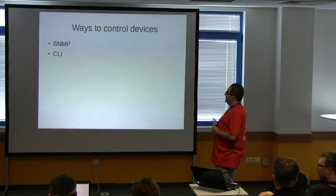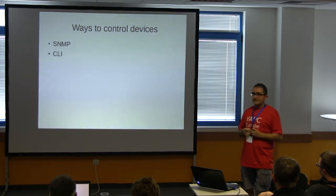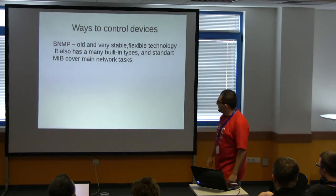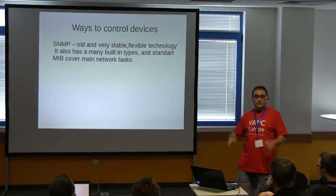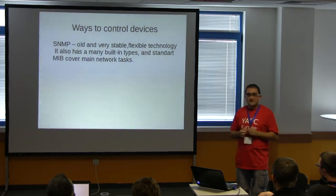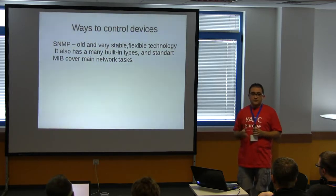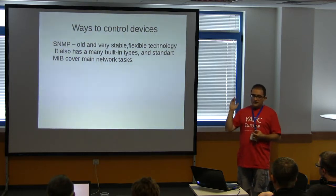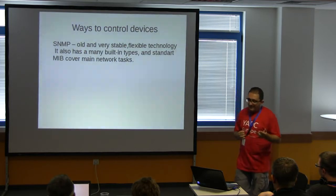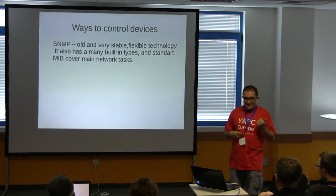Unfortunately, we have only two ways to control a network device. One is SNMP — it's a standard. The other is some workaround or something not ideal. A bit about SNMP: it's old and very stable, flexible technology. It has built-in types like integer, octet string, binary, and it has standard MIBs. MIBs are basic libraries which cover mainly network tasks — for example, adding a route, deleting a route, turning interfaces on or off, getting information. But if you have something non-specific like DSL, you need proprietary MIBs, and that's a problem.